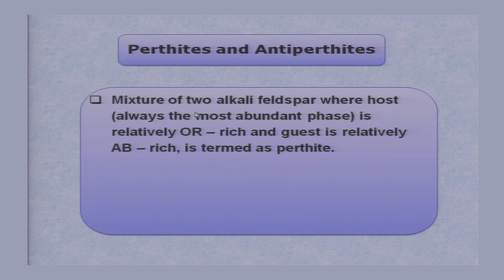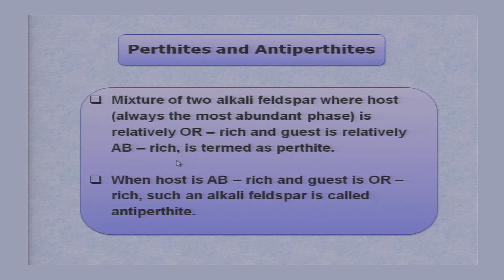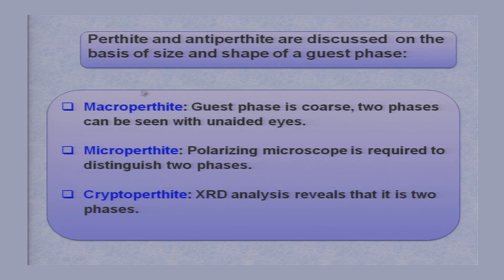Now I am coming to another variety of texture called perthites and antiperthites, or perthitic and antiperthitic textures. Perthites are mixtures of two alkali feldspars where the host — always the most abundant phase — is relatively orthoclase-rich, and the guest is relatively albite-rich. That is termed perthite. In certain cases the situation is reversed: when the host is albite-rich and the guest is orthoclase-rich, such alkali feldspars are called antiperthite.